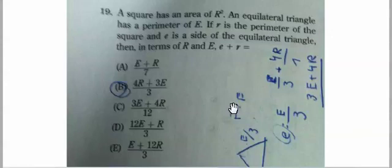An equilateral triangle — what do you know about an equilateral triangle? All the sides are equal. Okay, that's from Latin. 'Equa' meaning equal — it has nothing to do with horses. And 'lateral' meaning sides.